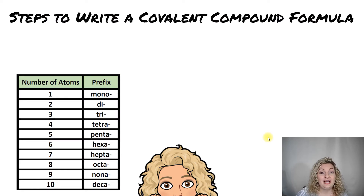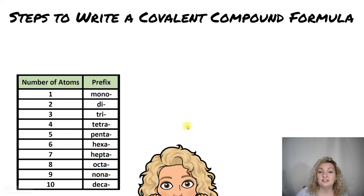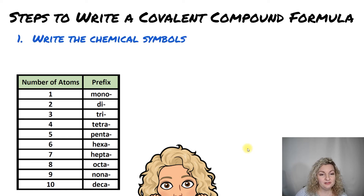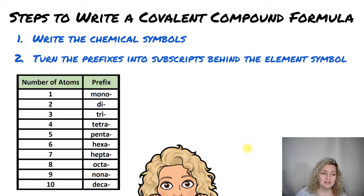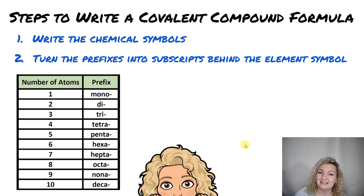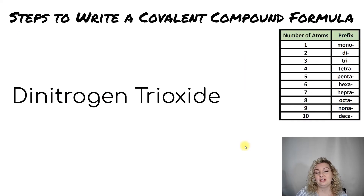You need to make sure you have all of your prefixes memorized. I put them over here so you could take a look at them and get to know them as you're learning how to write these formulas. So let's talk about our steps. Step one, you're going to write the chemical symbols. Step two, you're going to turn the prefixes into subscripts behind the element symbol. Let me show you what I mean.